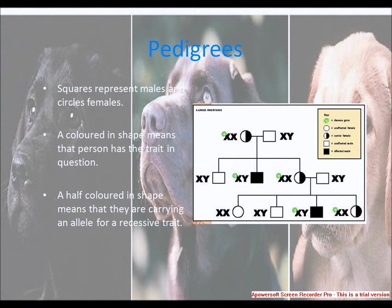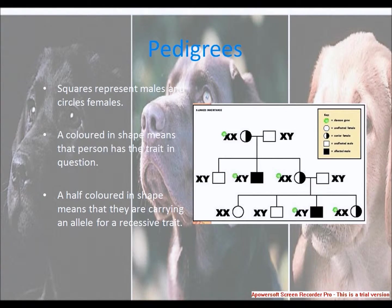A pedigree is a family tree or chart made of symbols and lines that represents a person's genetic family history. In a pedigree, symbols represent people and lines represent a genetic relationship.